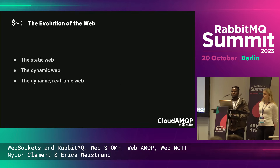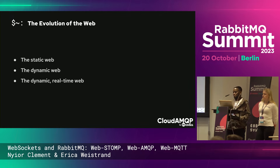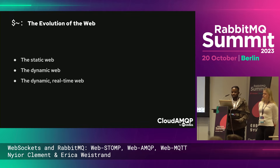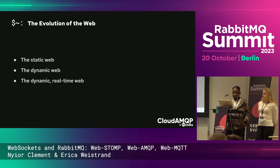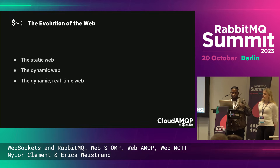The evolution of the web. In its initial phase the web was static — you go to a website and the same content is shown to every user. But then with the rise of databases and server-side scripting, websites started showing content to users based on the actions they initiate, marking the beginning of the dynamic web.